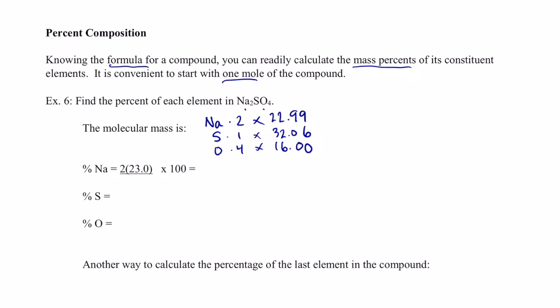Sodium is 22.99 grams per mole. Sulfur is 32.06 grams per mole. And oxygen — we've memorized that — it's 16.00. So 22.99 times 2 is 45.98. And 32.06 for sulfur. And 4 times 16.00 is 64.00 for the oxygens. So the molecular weight is 142.04 grams per mole.